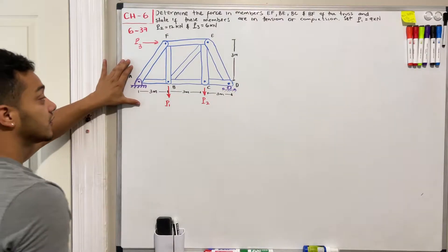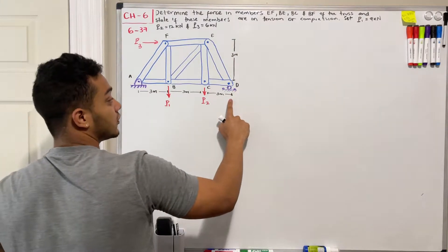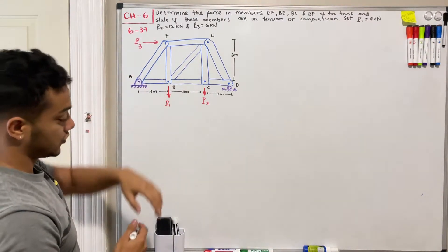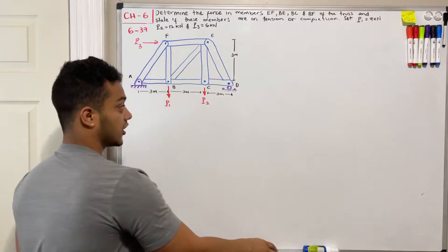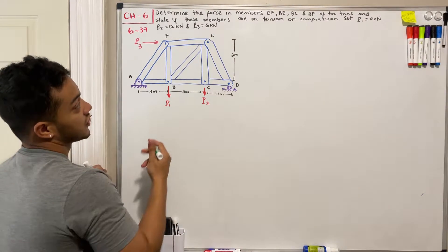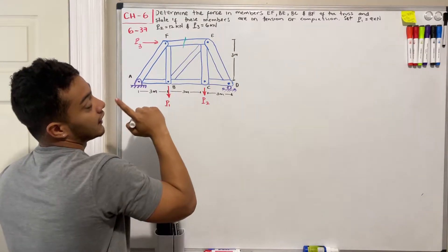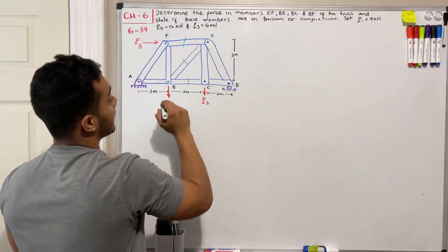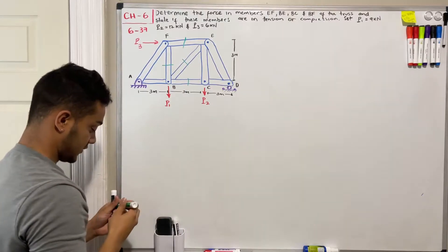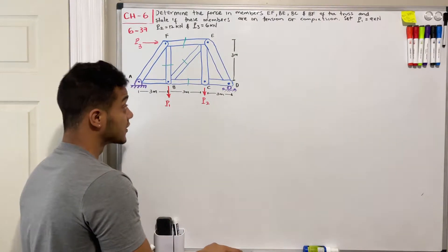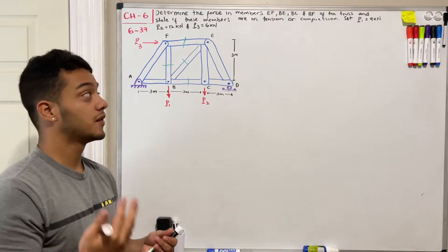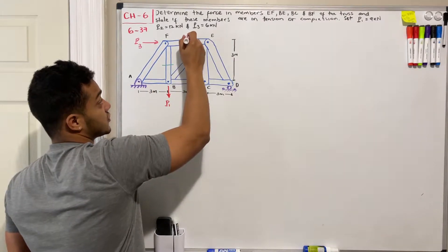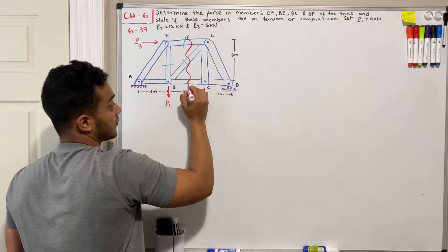We have our truss over here — there's a pin at A, a roller at D, and these are our forces P1, P2 and P3. They want us to determine the force in members EF, BE, BC, and BF. In order to do this, we're going to apply the method of sections plus the method of joints. I'm going to apply the method of sections through section AA.